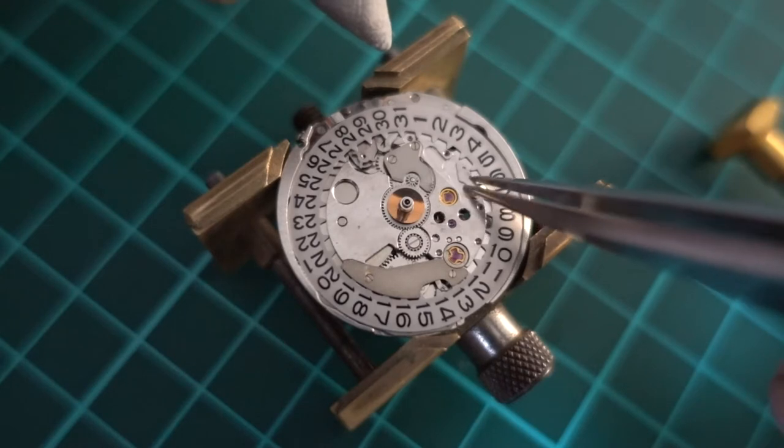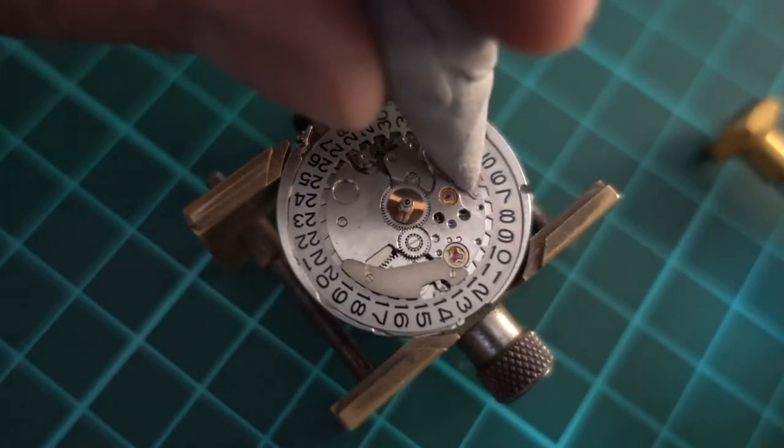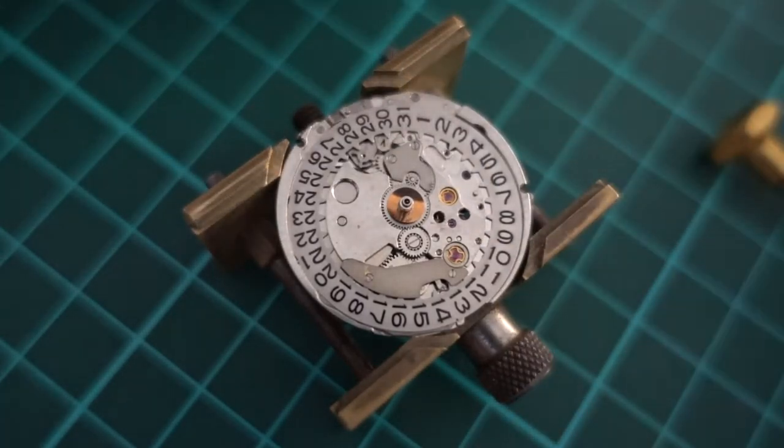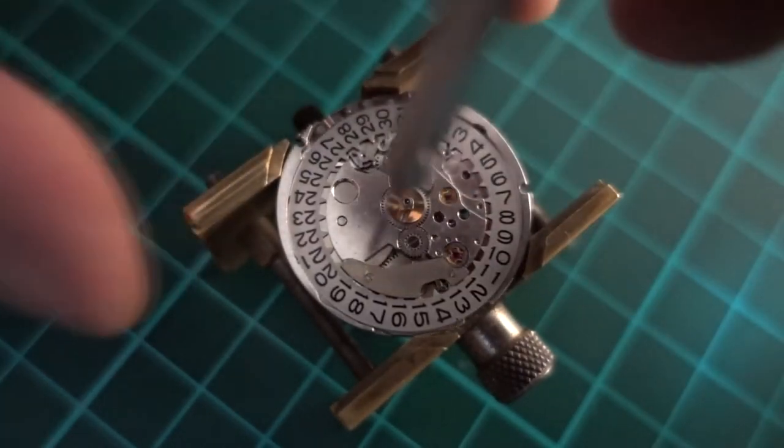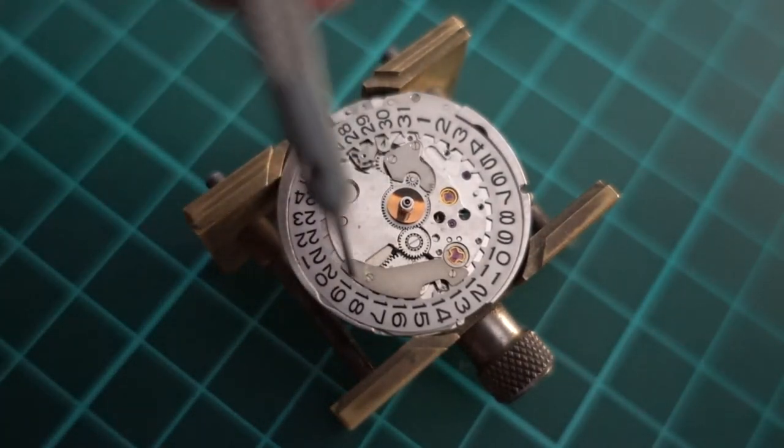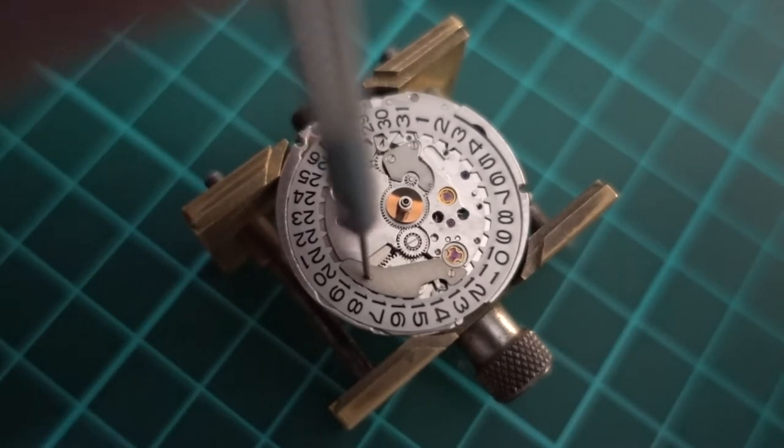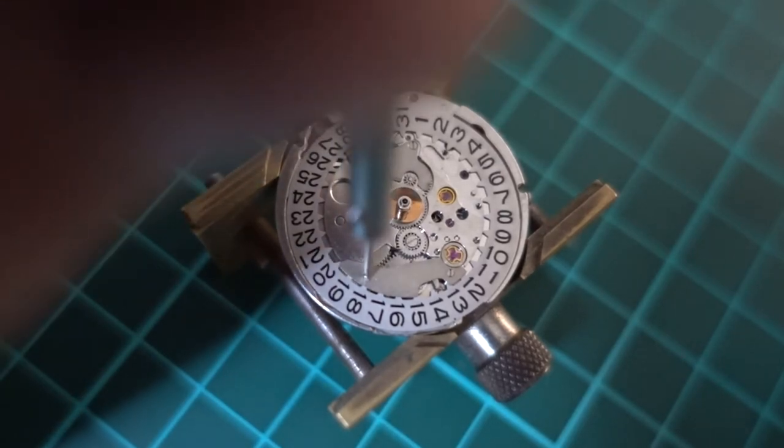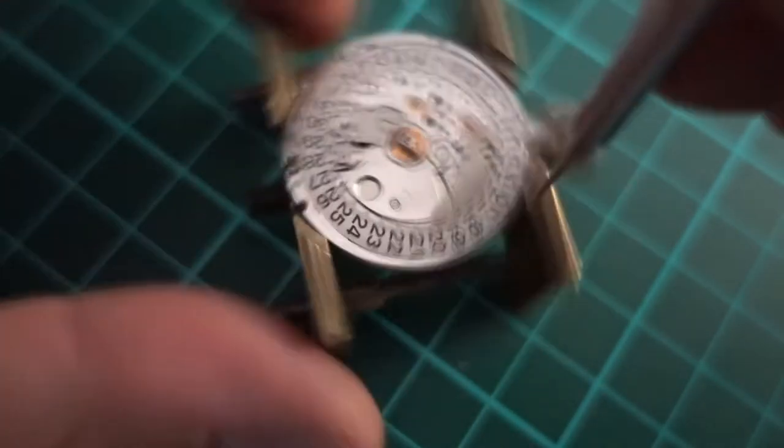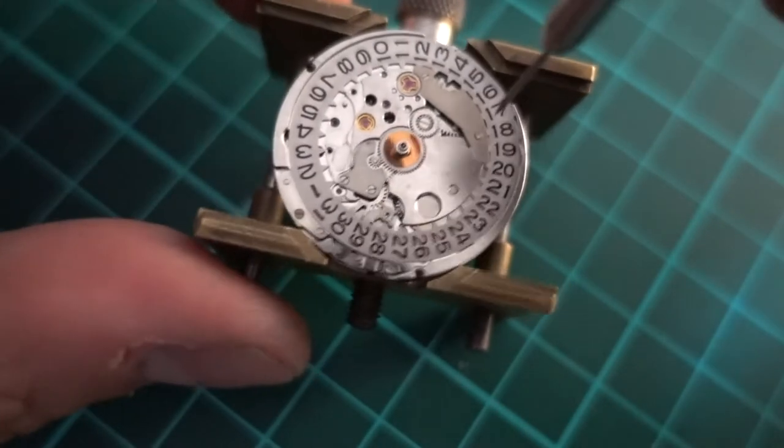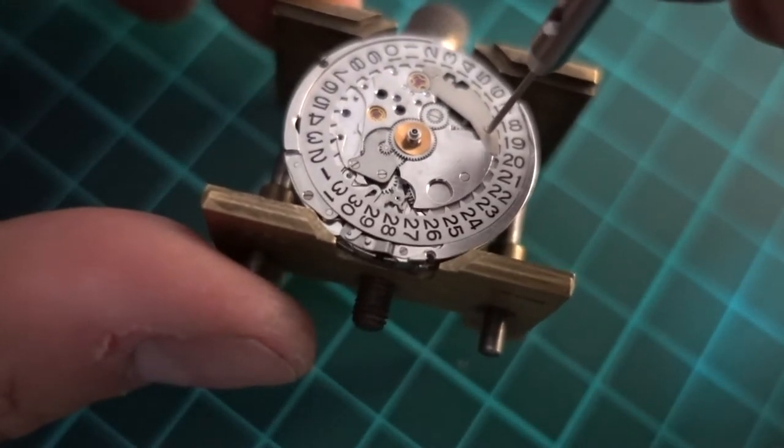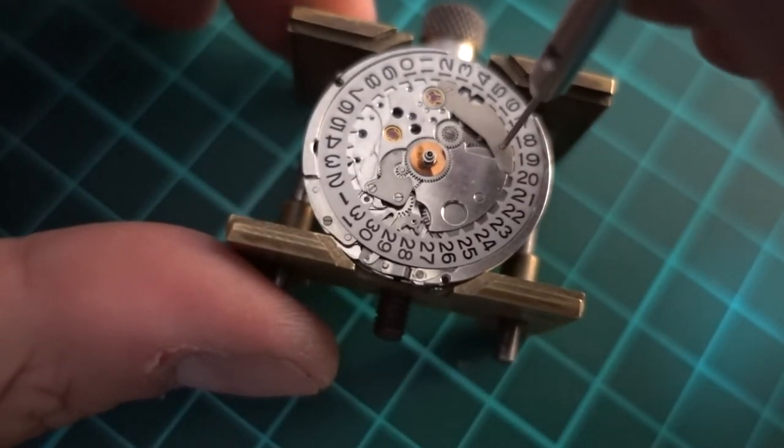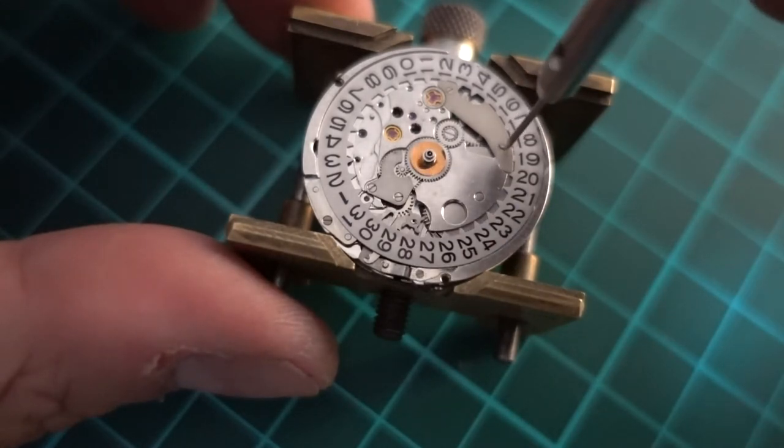The lever just comes off there. Just bear in mind I'm doing this on an angle so it's a little bit difficult to do. Then the next calendar plate comes off, and I'm just trying to be careful not to have a screwdriver slip and damage something.